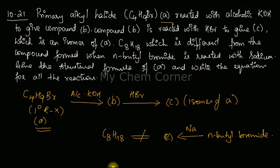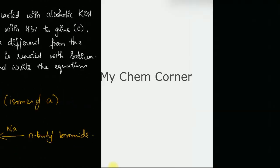The question asks us to give the structural formula of A and write equations for all the reactions. We need to figure out the correct reactions and solve this. The first condition is that the compound must be a primary alkyl halide. I have a few methods in mind — let's apply them one by one.